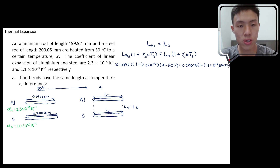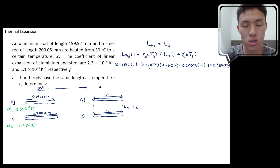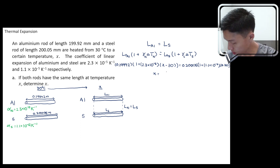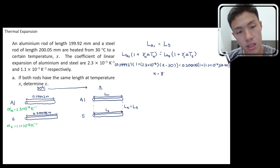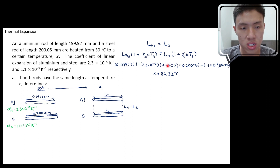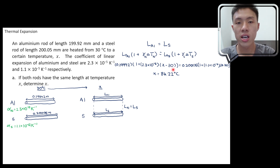There is only one unknown, x, so the equation is solvable. Using a calculator, the final temperature works out to 84.22°C. Make sure to keep temperature units consistent: if ΔT is in degrees Celsius, the answer is in degrees Celsius; if in kelvin, the answer is in kelvin. This is how you apply the thermal expansion equation for linear expansion.